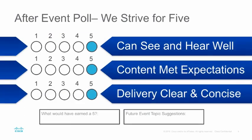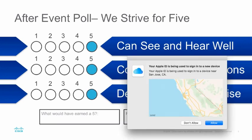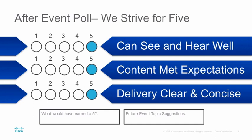After the event you'll be directed to a poll, and I want all fives. I know — before my job at Cisco I never gave fives. But really, if you can see and hear well, please give us a five. If the content met your expectations, give us a five. If it was clear and concise, give us a five. But if we didn't earn a five, let us know how we did. I'd really love to know what would have earned a five, and if you have ideas for future sessions, add those to the poll at the end.